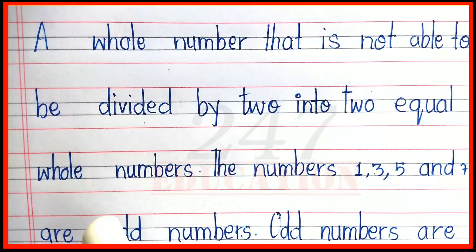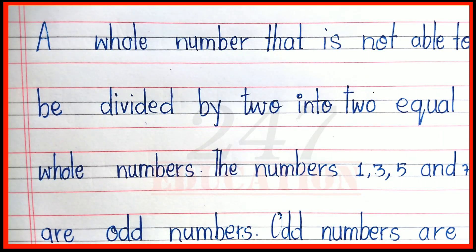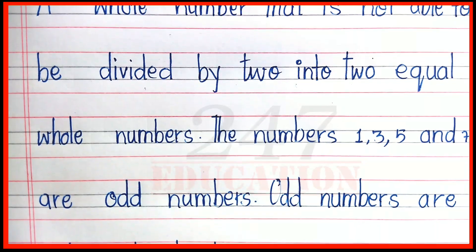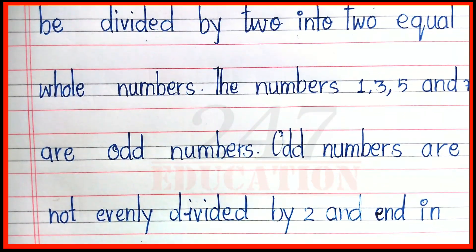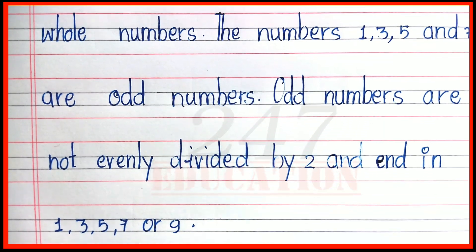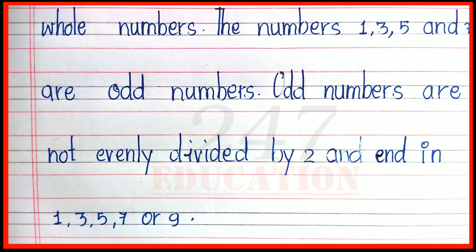A whole number that is not able to be divided by 2 into 2 equal whole numbers — the whole numbers one, three, five, and seven are odd numbers. Odd numbers are not evenly divided by 2.